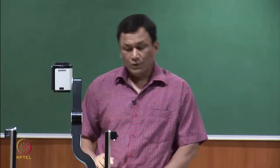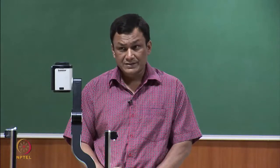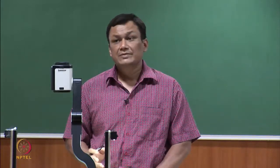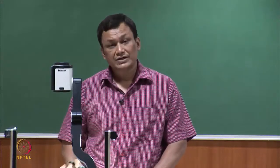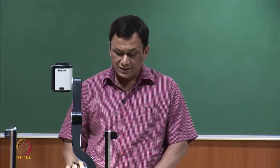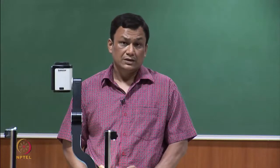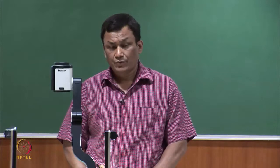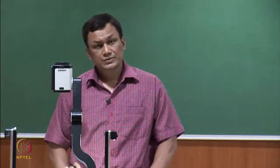What will be the behaviour of this tightest structure? This structure will be mechanically very strong, but it is less porous. That means fluid transmission properties — air permeability, for example — will be very less for this kind of structure. It is mechanically stable; however, it is not very soft, not very porous, and its fluid transmission properties will be less.